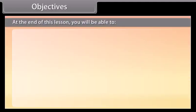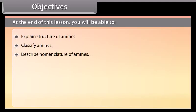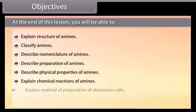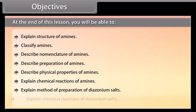At the end of this lesson, you will be able to: explain the structure of amines, classify amines, describe nomenclature of amines, describe preparation of amines, describe physical properties of amines, explain chemical reactions of amines, explain the method of preparation of diazonium salts, and explain chemical reactions of diazonium salts.